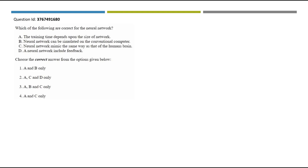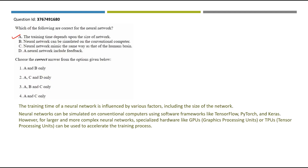Which of the following are correct for neural networks? Statement A: training time depends on the size of the network — this is correct. Statement B: neural networks can be simulated on conventional computers using frameworks like TensorFlow, PyTorch, and Keras. However, for larger networks, specialized hardware like GPUs (graphics processing units) and TPUs (tensor processing units) is used to accelerate training — this is not present in conventional computers, so B is questionable.